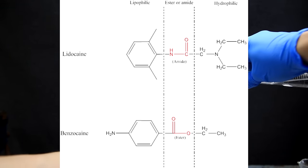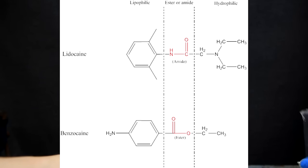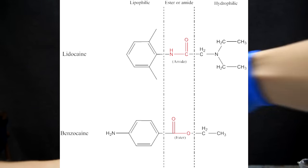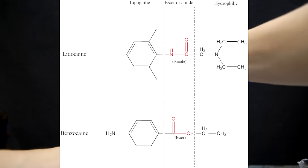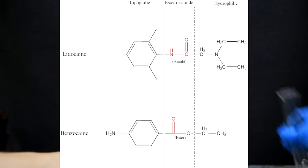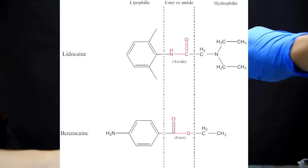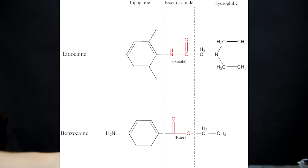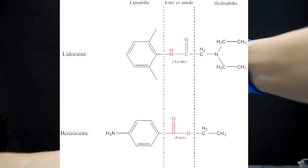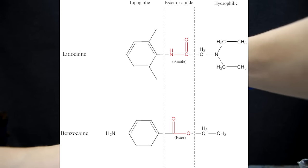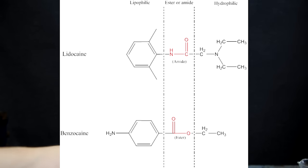Lipophilic literally means fat-friendly, and this end likes to dissolve in things like fats and oils. Hydrophilic means water-friendly, and this end likes to dissolve in water. The final piece is the structure that holds these two different ends together — in local anesthetics, this linkage involves structures known as esters or amides.